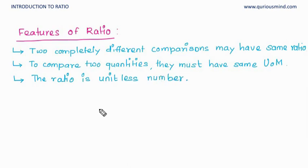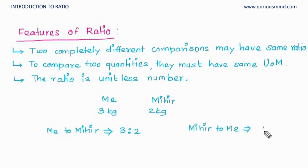Take another example. Let's say I have 3 kilogram of sweets and Mihir has 2 kilogram of sweets, so the ratio of sweets with me to Mihir is 3 is to 2. And now the ratio of Mihir to me is 2 is to 3. So if we observe, these two are not same. Here it is 3 is to 2, here it is 2 is to 3. So ratio of one quantity to other may not be same as the ratio of the second quantity to the first.